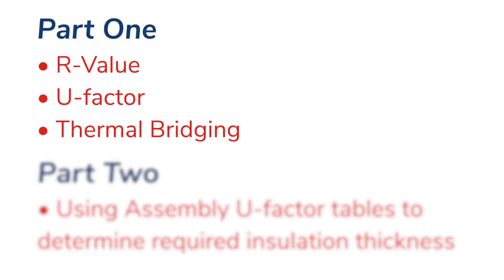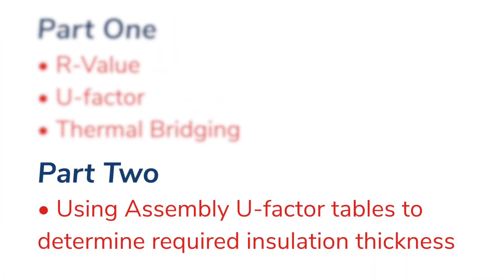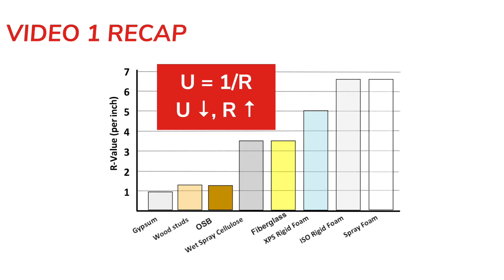Now that I've covered the basics in part one of this video series, I'll now show you how to use a prescriptive approach to comply with energy codes and determine required insulation thicknesses. Last time we discussed that R-value and U-factor are two properties that give you a sense of how well a material or an assembly of materials either resists or allows heat flow.